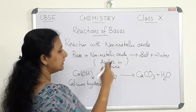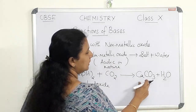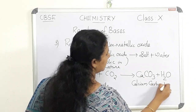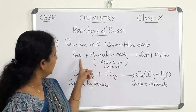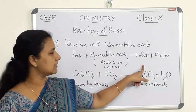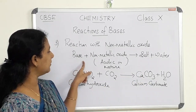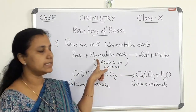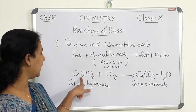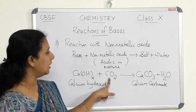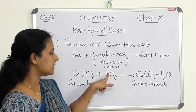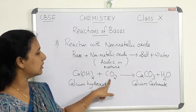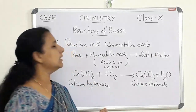Non-metallic oxide is acidic in nature. Both react together to form the corresponding salt — calcium carbonate — and water as the by-product. We know that base and acid produce salt and water; similarly, base reacts with a non-metallic oxide produces salt and water, since non-metallic oxide is acidic in nature. Calcium hydroxide is the base, carbon dioxide is the non-metallic oxide, and both react to produce salt and water. These are the reactions of bases.